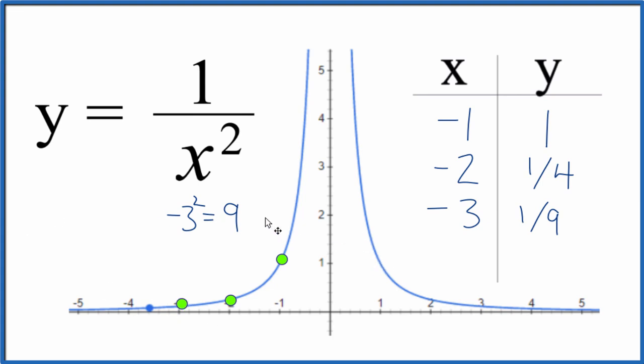We could also put fractional values in. So let's put negative one half in. y equals 1 over negative one half, and that's squared. So 1 squared is 1, 2 squared is 4.